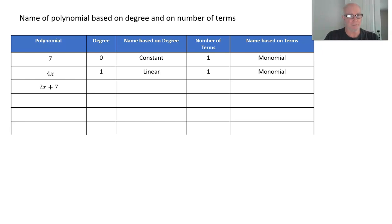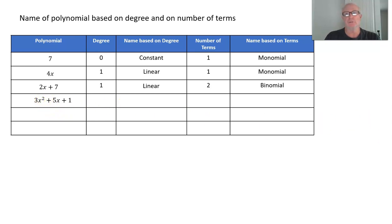2x + 7 — again, x to the first, so that's a degree of 1; therefore it's a linear polynomial. Now there are two terms. A polynomial with two terms is a binomial. Next, we have 3x² + 5x + 1. The highest exponent is 2, so the degree is 2. Any polynomial with a degree of 2 is called a quadratic polynomial. There are 3 terms, and any polynomial with 3 terms is called a trinomial.